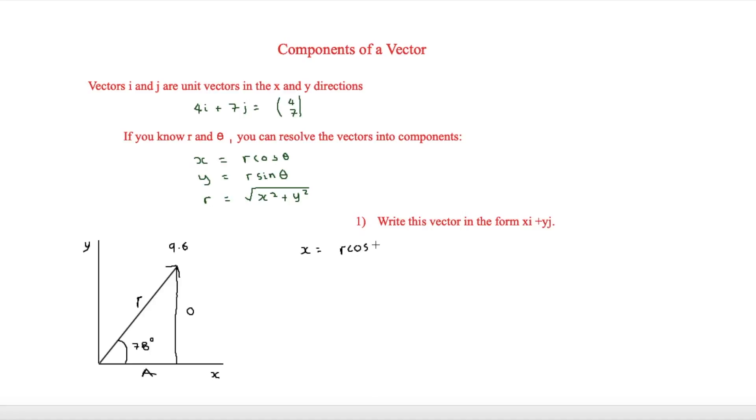And we know that it's going to be cos because it's adjacent over hypotenuse there. So adjacent is obviously the thing we're trying to find out here.